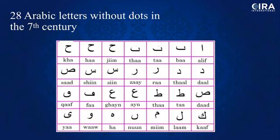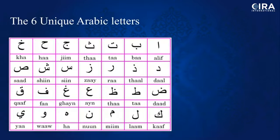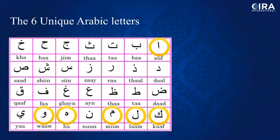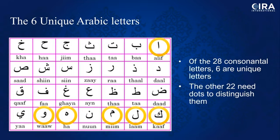Why is this important? Looking at these Arabic alphabet letters — the 28 letters — without dotting. Six of the 28 letters can survive without dotting: Aleph, Kaf, Lam, Mim, Ha, and Waw. They are unique letters that need no dottings — whenever you have an Aleph, it's always an Aleph. But the other 22 letters require dottings, which means the letter itself can change depending on where the dots are placed.